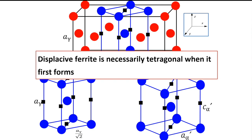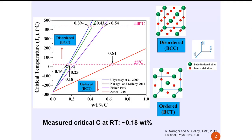resulting in a tetragonal structure. When displacive ferrite first forms, it is necessarily tetragonal. But afterwards, if the temperature is high enough, it can redistribute itself. There is a temperature called the Zener ordering temperature. If the transformation is above that temperature, carbon atoms can jump around and the crystal structure will be body-centered cubic. But if the temperature is less than the Zener ordering temperature, the transformation will continue to remain tetragonal.